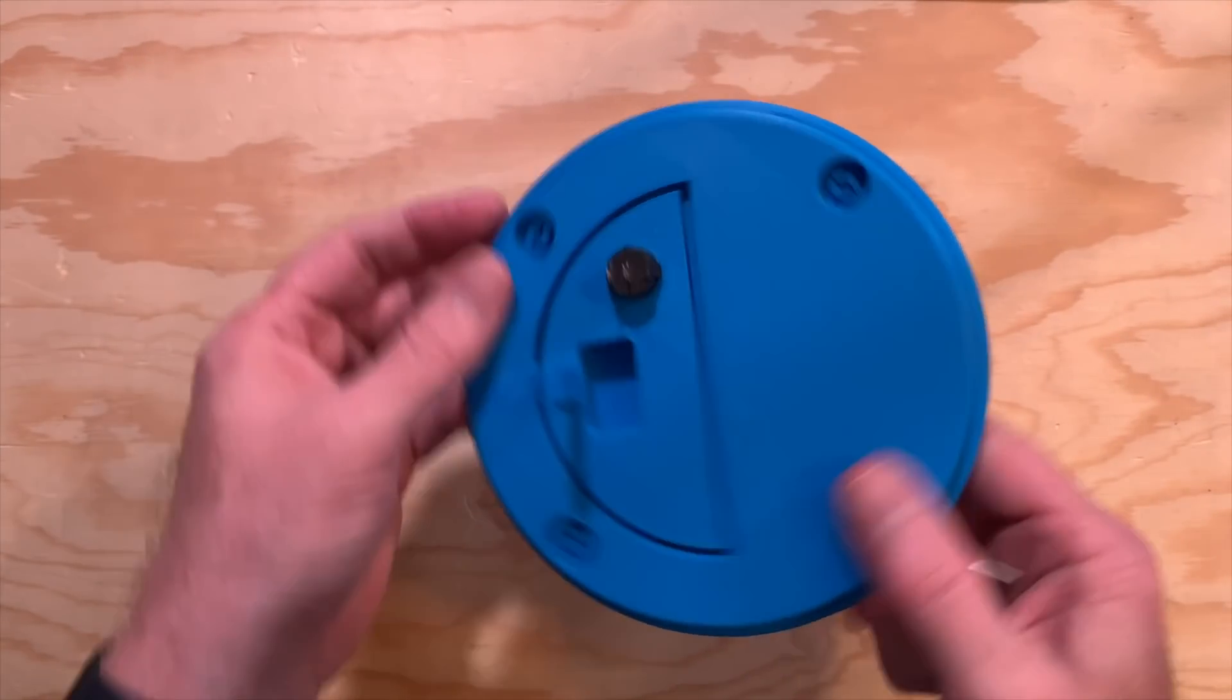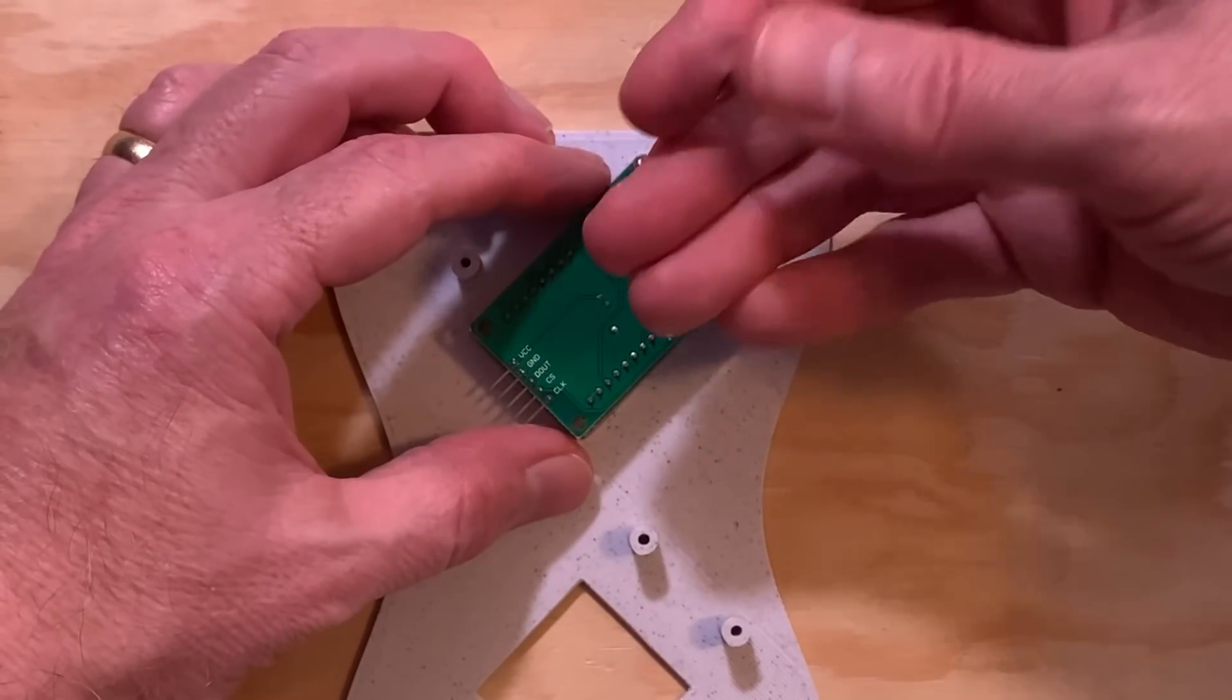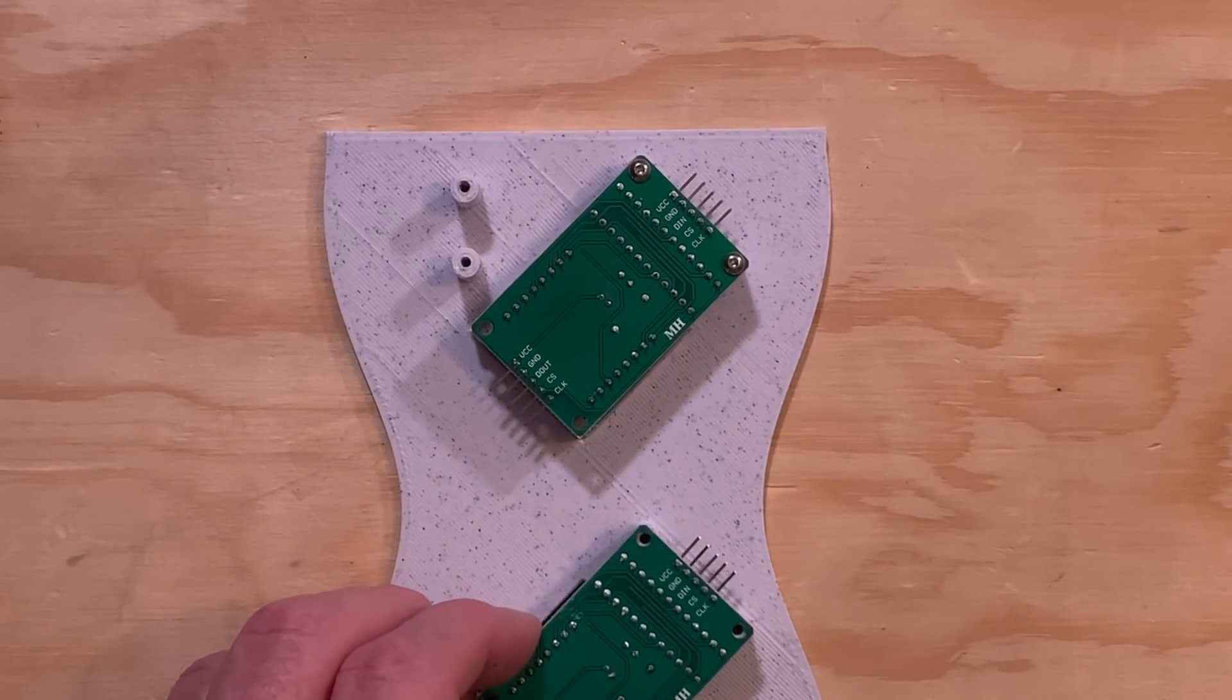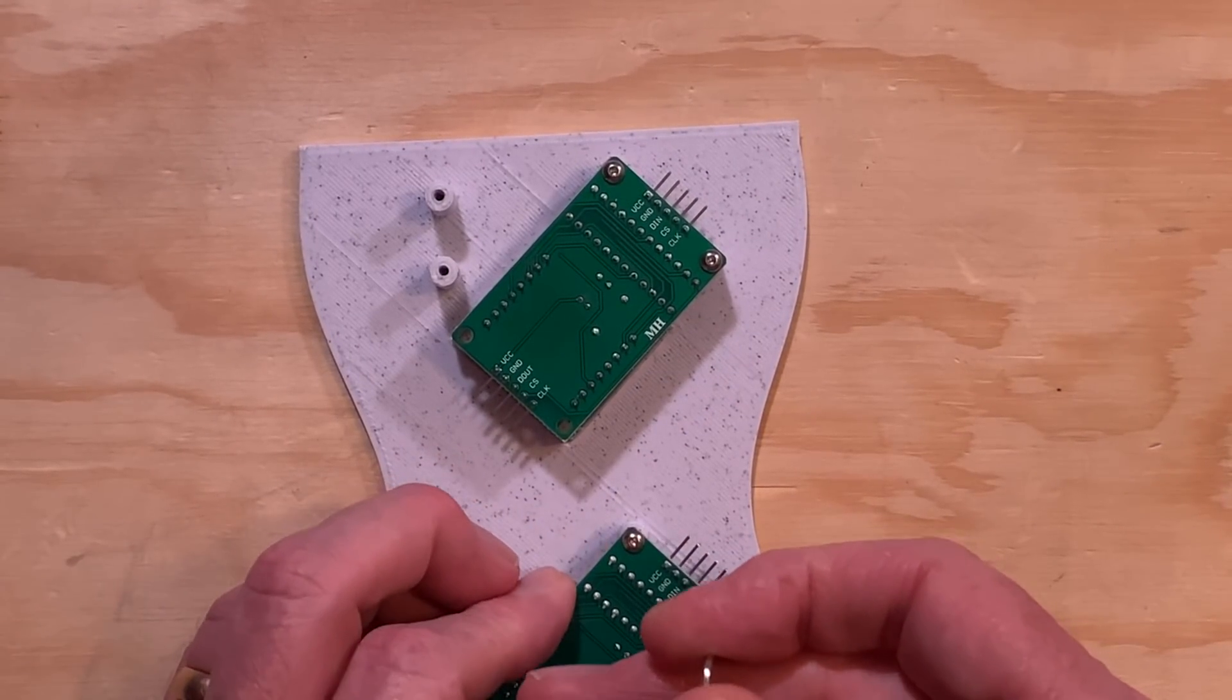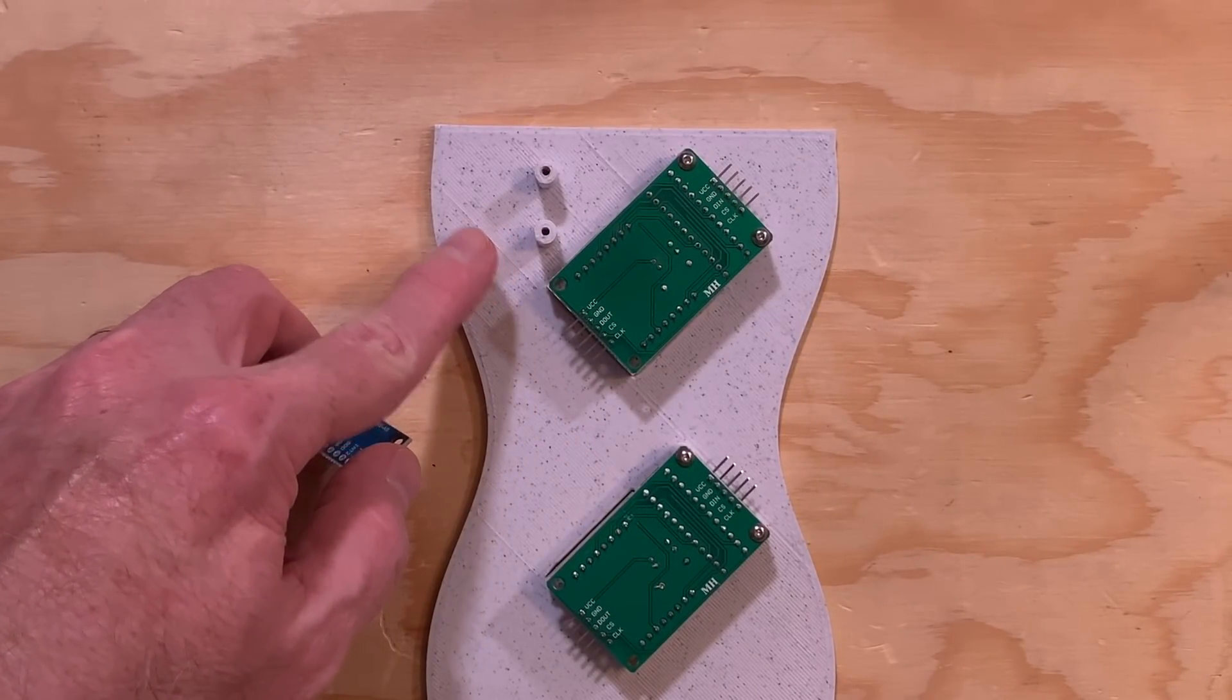While you're working with the top, screw the battery clip into the top part too. Next, mount the two LED matrix panels to the flat front plate of the hourglass. They'll each be held into their mounting posts by a pair of screws.